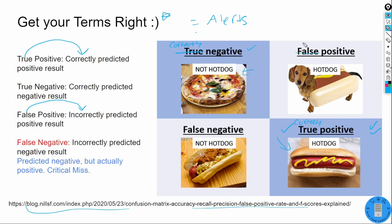A false positive — replacing false with 'incorrectly' — is when we said it was a hot dog, but when we researched the alert further, it was actually just a wiener dog. We incorrectly identified a positive detection. We got it wrong and now have to tune our alert to stop triggering on the wiener dog and actually hit on the real hot dog.